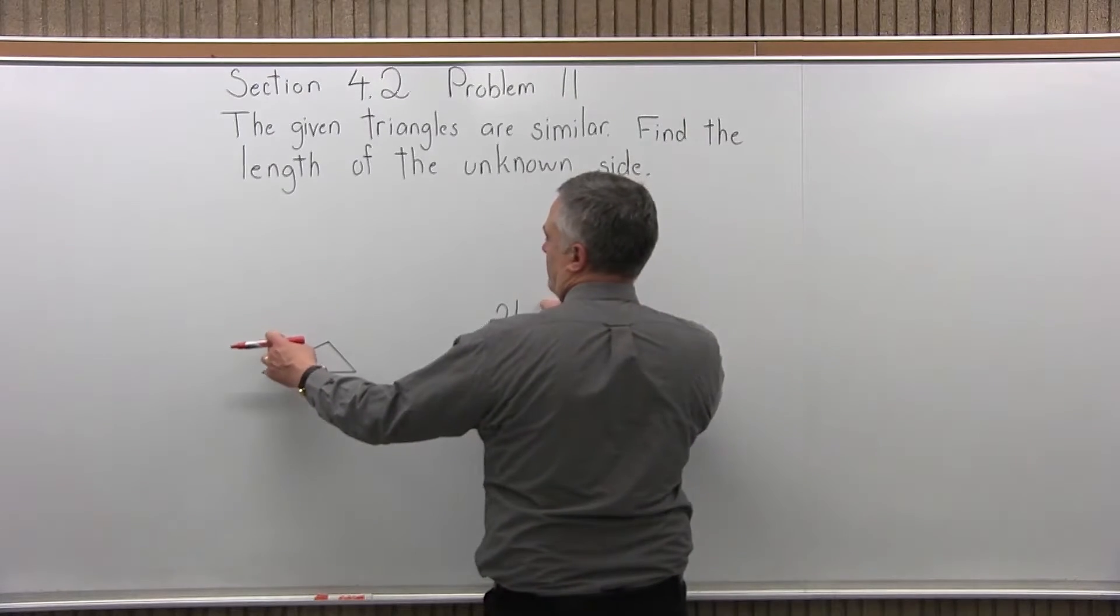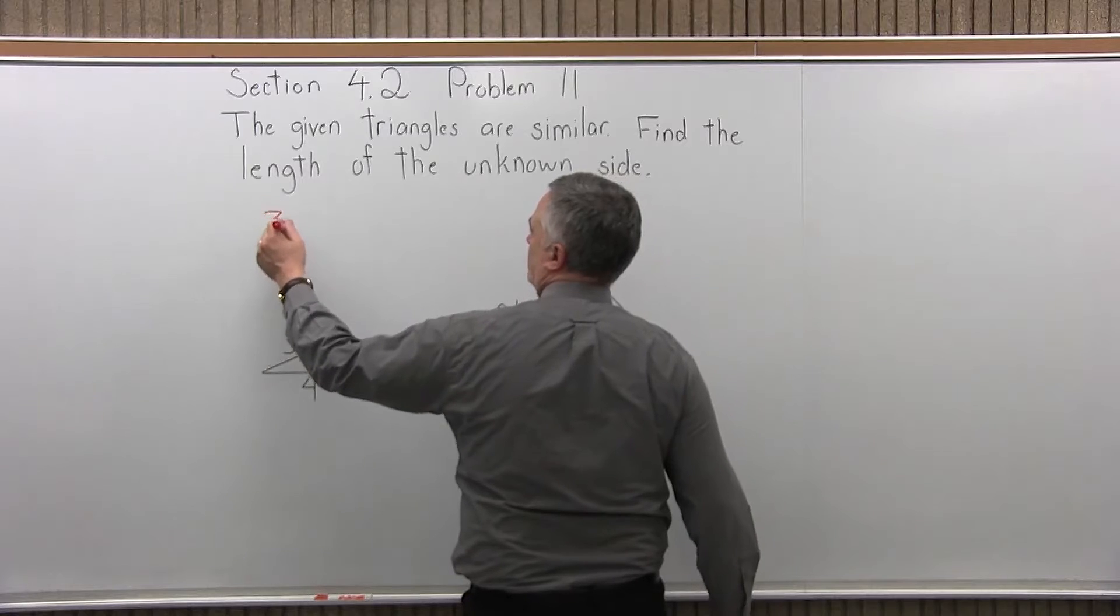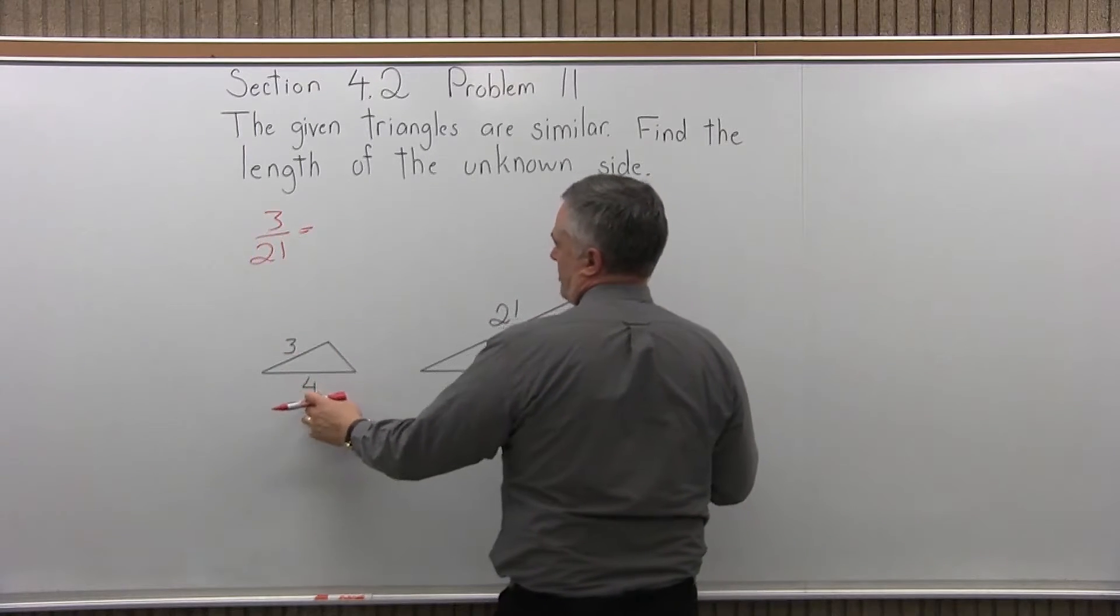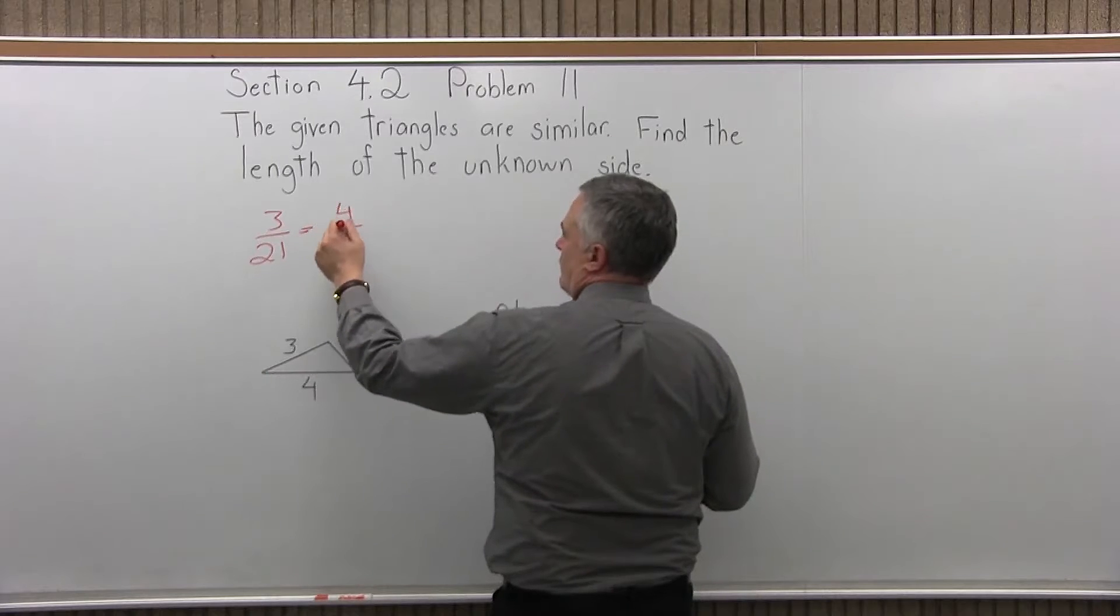So the upper left side to the upper left side, you're going to have 3 to 21 equals bottom to bottom, 4 over N.